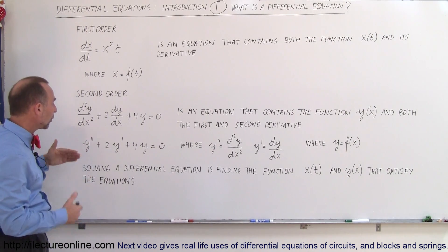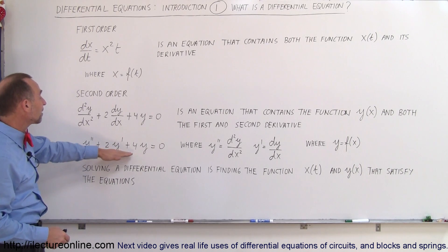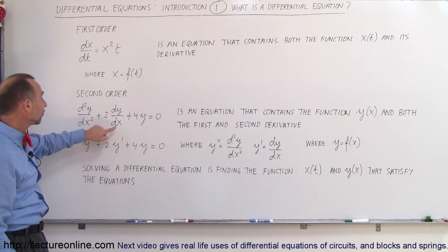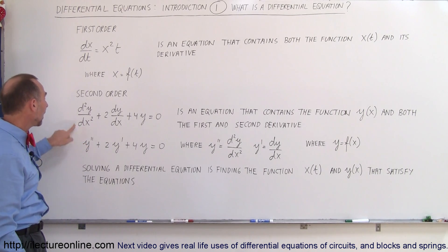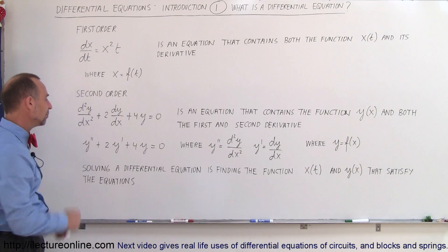Sometimes we write the equation like this: y double prime plus two times y prime plus four y equals zero. Y is the function, y prime is the first derivative and y double prime is the second derivative, so that's an easy way of writing it, it's less messy.